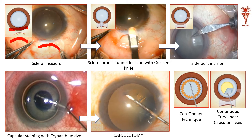Once the section is made, we use a crescent knife — can you see the tip? The tip of the knife is like a crescent, so it is called a tunnel blade or crescent blade. This crescent blade is used to tunnel the incision. Once you tunnel this incision, you have created a sutureless tunnel wound which can be entered.